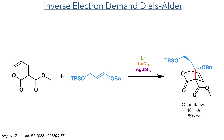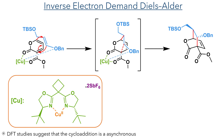Unlike the typical Diels-Alder reaction, the inverse electron demand Diels-Alder has an electron-poor diene and an electron-rich dienophile. In this reaction, the copper complex first coordinates to the pyrone and ester carbonyl groups, tethering the dienophile and allowing it to approach stereoselectively. DFT studies suggest that this cycloaddition is asynchronous, with the bond closest to the endocyclic oxygen forming first, followed by the bond adjacent to the benzyl group.